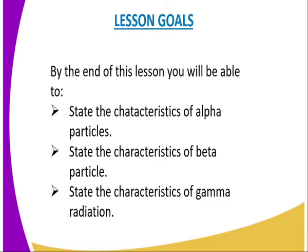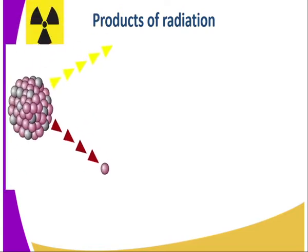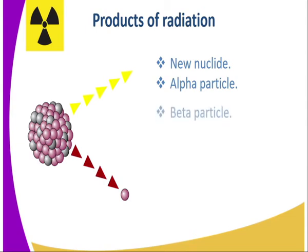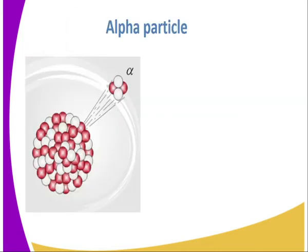Alpha, beta, and gamma radiation. What are the products of radiation? Previously we have talked about radioactivity — the process through which unstable nuclei disintegrate, yielding a new nucleus. In addition, an alpha particle and a beta particle can be produced, as well as radiation in the form of energy, or gamma radiation. Those are the products that may occur as a result of nuclear fission or nuclear fusion.